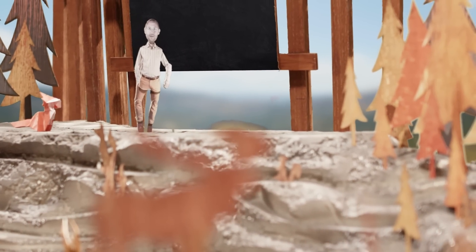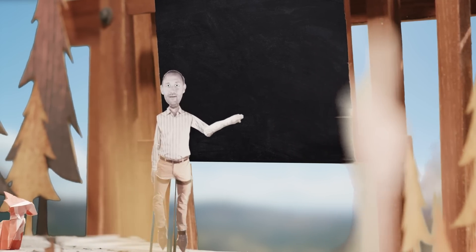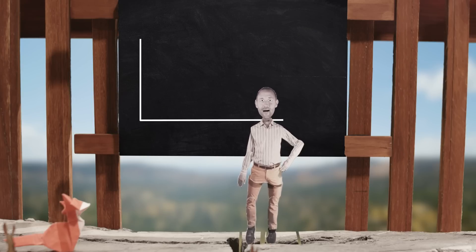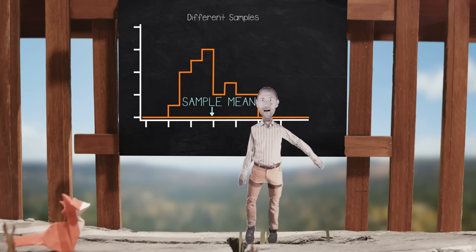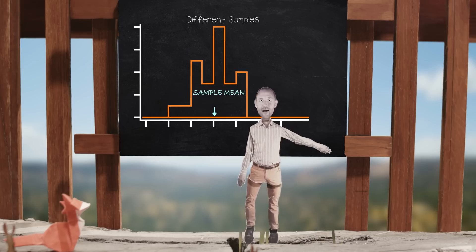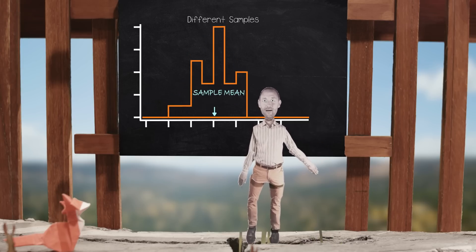But what if our guess for the population mean relied solely on the sample mean we got today? Wouldn't relying on this single value be problematic? Wouldn't other samples we took tomorrow be different? The sample mean is our best guess at the population mean, but we know that this estimate will differ a bit from the true value, due to what we call sampling variability.